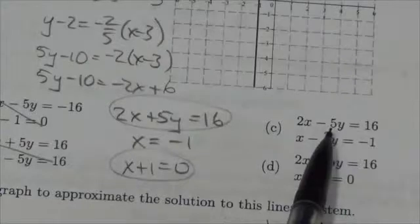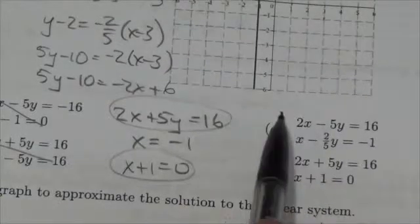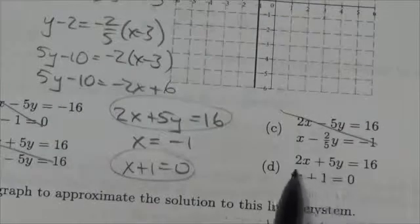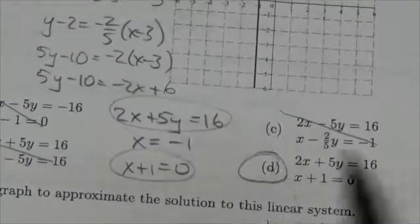2x minus 5y equals, nah, it's not that one. It's got to be this one right here. 2x plus 5y equals 16, x plus 1 equals 0, yay, that's the one.